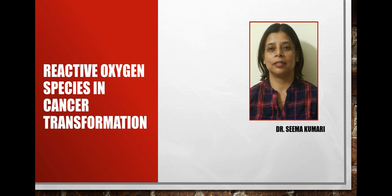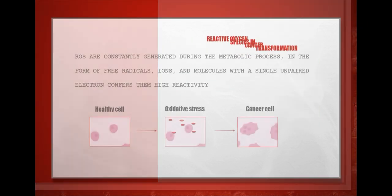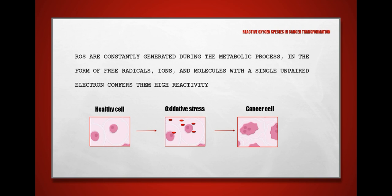This lecture covers reactive oxygen species (ROS) and their role in cancer transformation. ROS are constantly generated during metabolic processes in the form of free radicals, ions, and molecules with a single unpaired electron, which confers them high reactivity. Normally, homeostasis between ROS production and clearance is maintained by the antioxidant system.